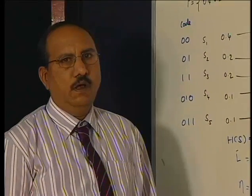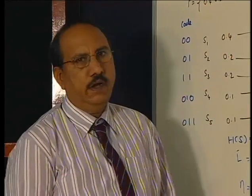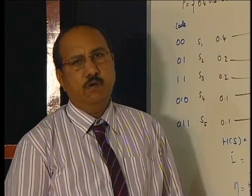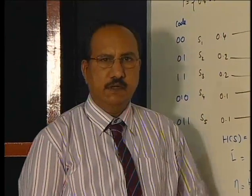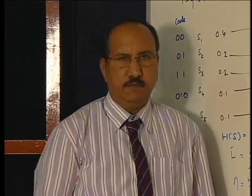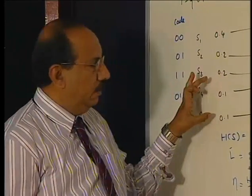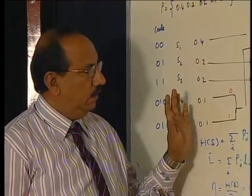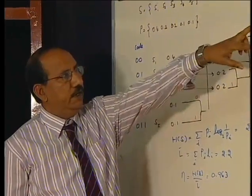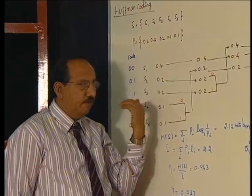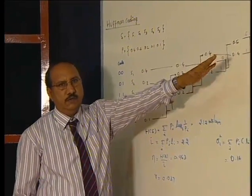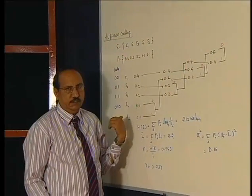I will be explaining how to get a minimum redundancy Huffman code. According to Huffman coding, whenever we have symbols, we arrange them in the order of decreasing probability. Then we add the probability of the last two symbols and proceed further. Once we get the last two elements, we proceed in the backward direction, assigning 0 and 1 at each step.